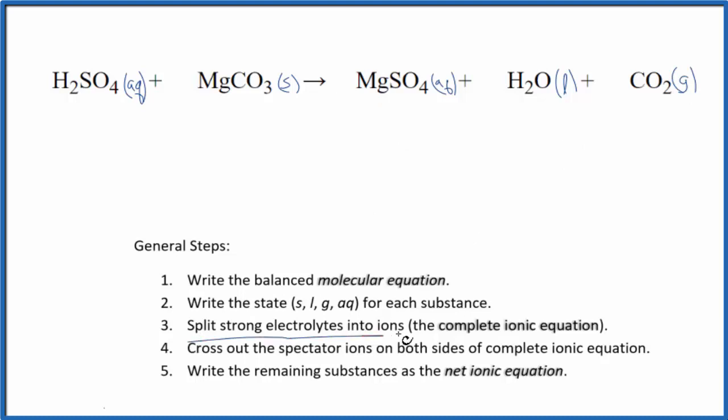Now we can split the strong electrolytes into their ions for the complete ionic equation. So we have hydrogen on the periodic table, group 1, that has a 1 plus ionic charge. The whole sulfate is 2 minus. So we have 2 hydrogen ions, 2H plus, and I'll write aqueous at the end, plus the 1 sulfate ion. And then for the MgCO3, that's a solid. We don't split those apart in net ionic equations. So it just stays MgCO3.